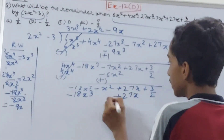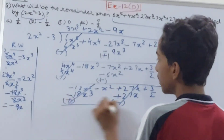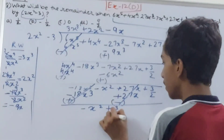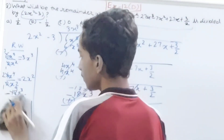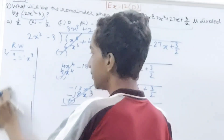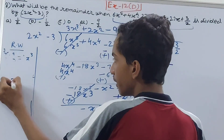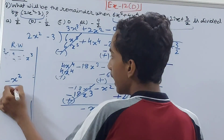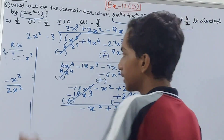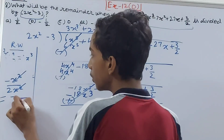Change the signs — minus 18x cubed cancels, and 27x cancels as well. What remains is minus x squared plus 3/2. Now we divide: minus x squared is the first term of the remaining dividend, divided by 2x squared — x squared cancels with x squared, and the minus sign remains over 2.